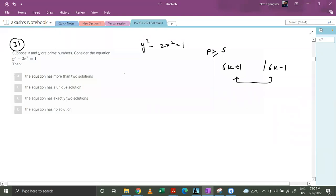So let's take the first case: x equals to 6k plus 1. Now if y is also a prime number, then when I'm putting this value of x, it should also be represented in either this or this manner.